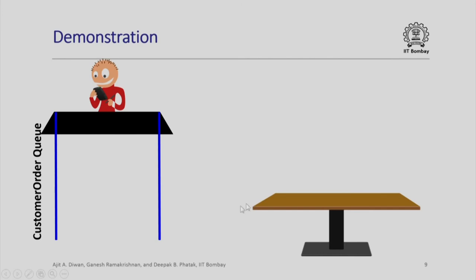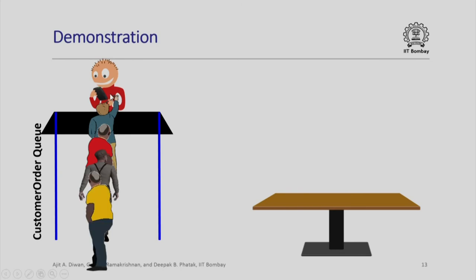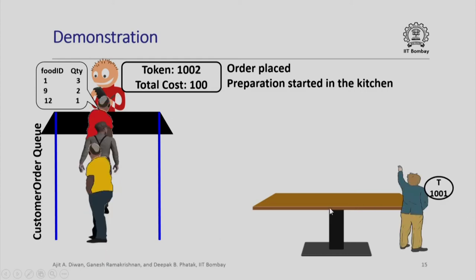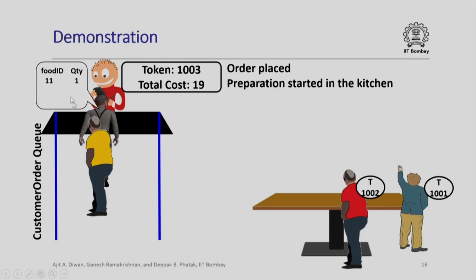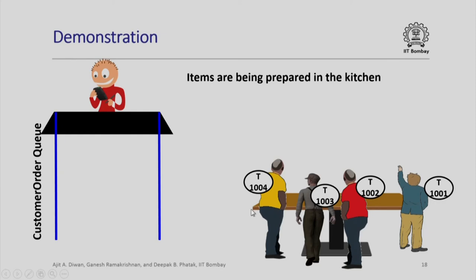Let us demonstrate this entire process. Here is the person from the restaurant waiting for customers. The customers come one by one. Let us assume four customers have joined this queue. The first customer is placing the order, specifying food id and quantity, and gets token number 1001 with a cost of 165. Order is placed and preparation starts in the kitchen. This customer then waits at a table for the order to be dispatched. The second customer has a smaller order cost but many items, which may take longer to prepare. The third and fourth customers each have only one food item. At the end, all four have collected their coupons, placed their orders, and are waiting at the table while all items are being prepared in the kitchen.